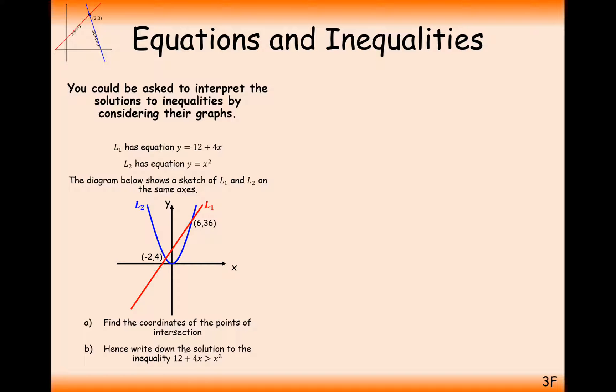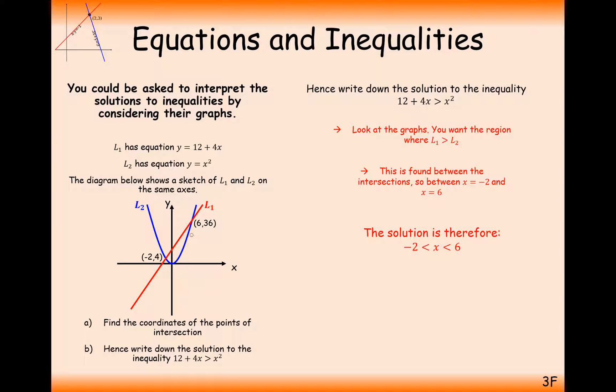Now what we need to do for part B is to write down the solution of the inequality 12 + 4x is greater than x². Effectively what we want here is the line L1 to have a higher y value than line L2. Looking at the graph here, we want the line L1 to be above the line L2 for a certain value of x.